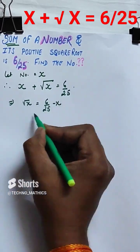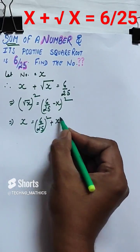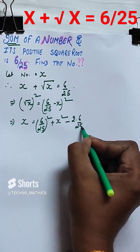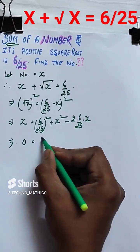Then x plus root x equals 6 by 25, as per the criteria given in the question. To eliminate the square root of x, put root x to one side of the equation and square it.